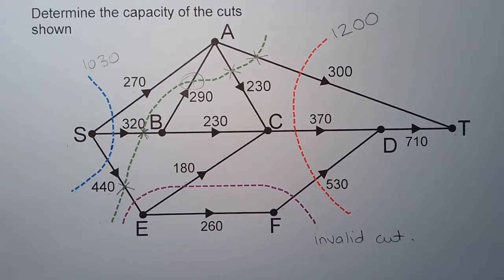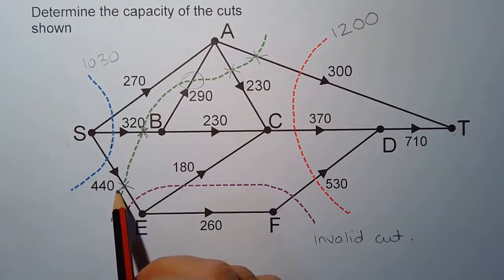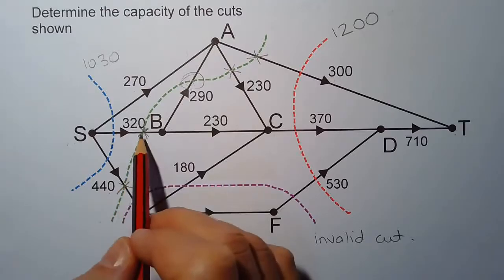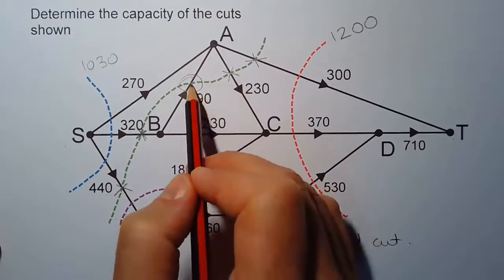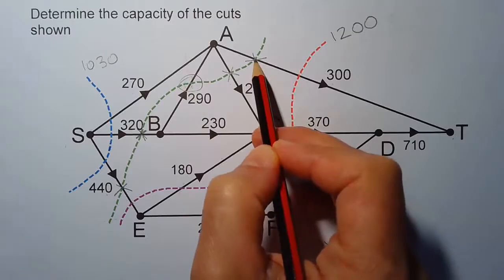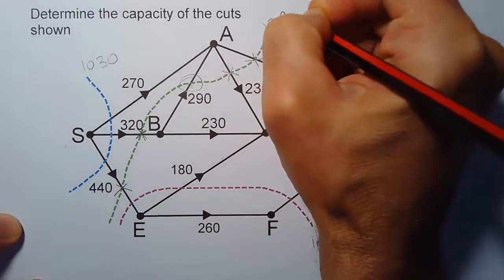That also applies to cuts on edges going in the opposite direction — from sink back to source. So adding up the four necessary edges for the green cut: 440 plus 320 — ignoring the unnecessary edge AB — plus 230 plus 300, we get a capacity of 1290.